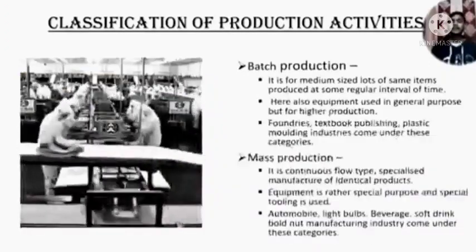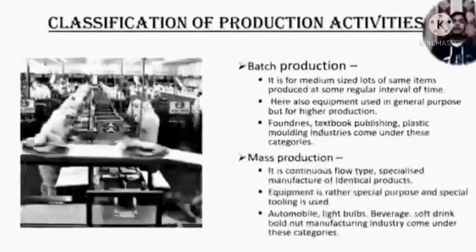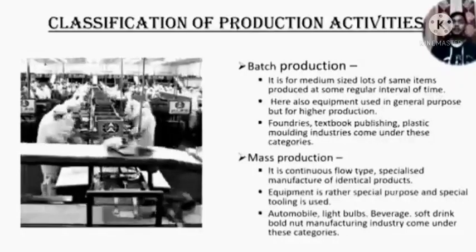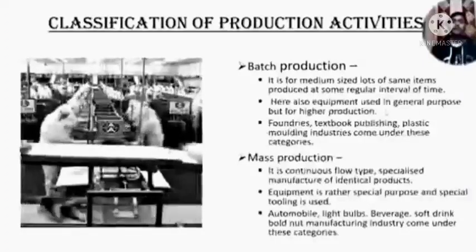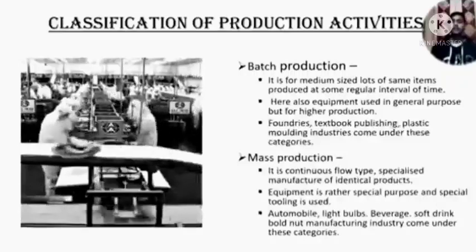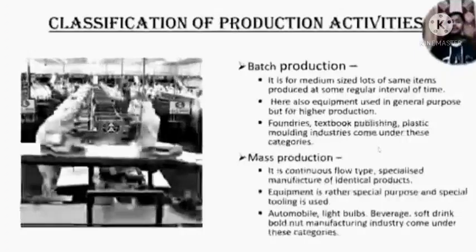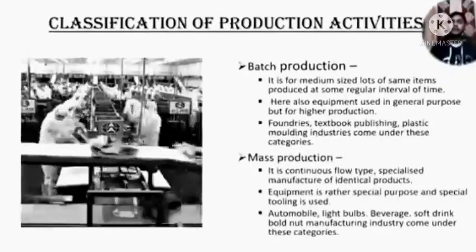The next one is batch production. Batch production is for medium-sized lots of the same items produced at some regular interval of time. Equipment used is general purpose but for higher production. Founders, textbook publishing, and plastic molding industries come under this category. In this category, CNC machines are broadly used because they use the theory of mid-volume, mid-variety.